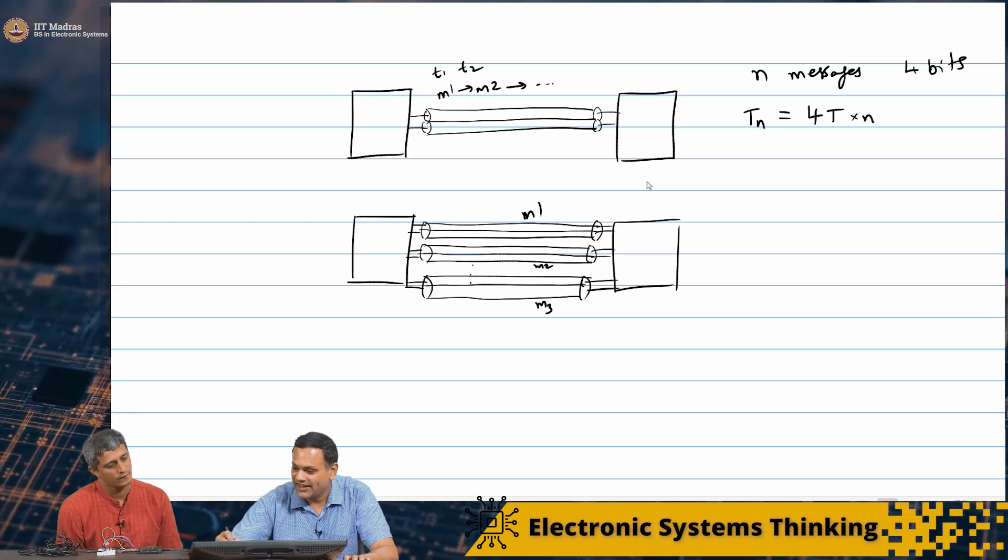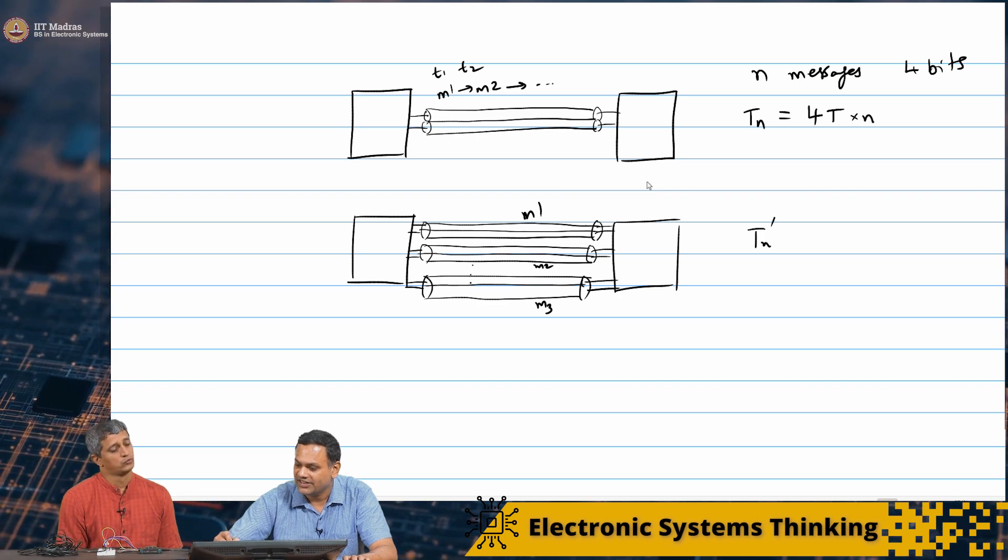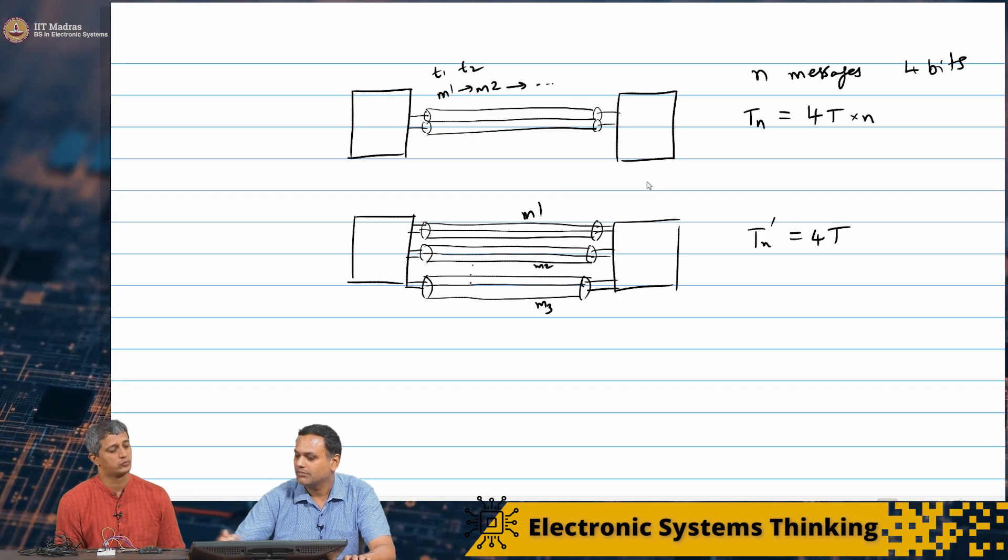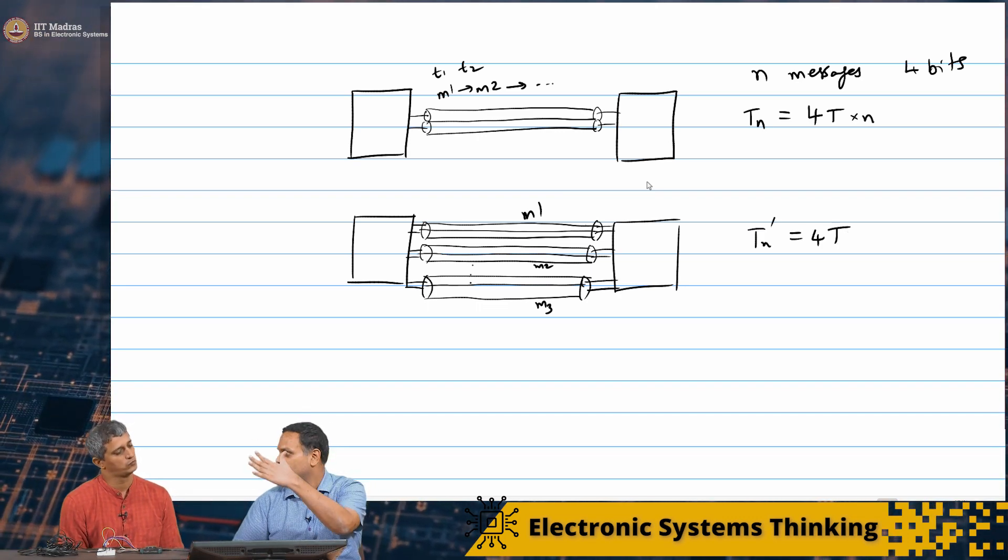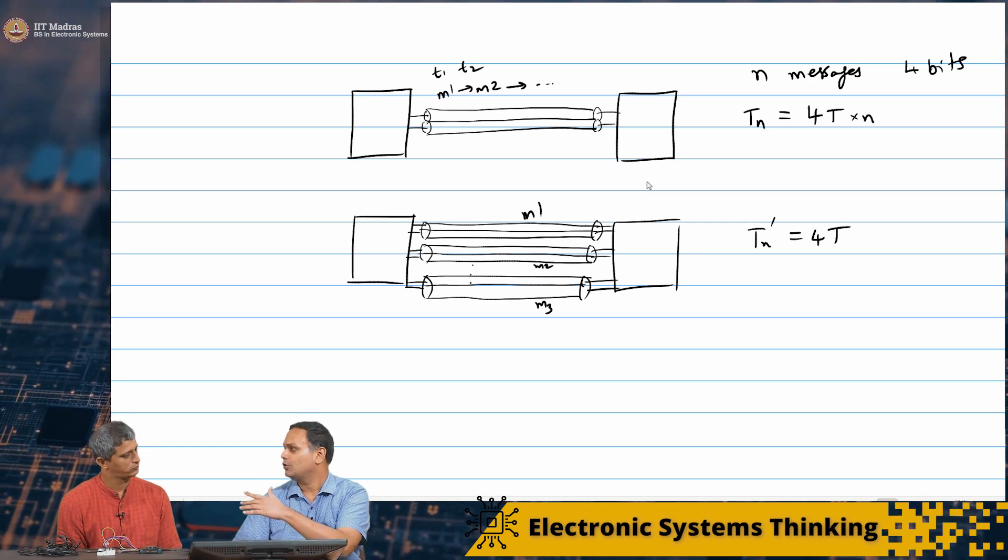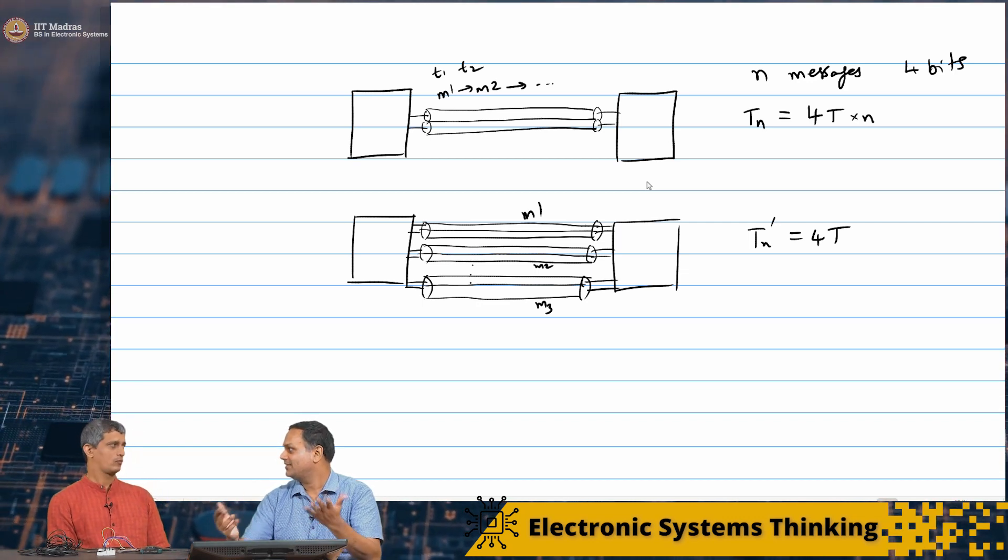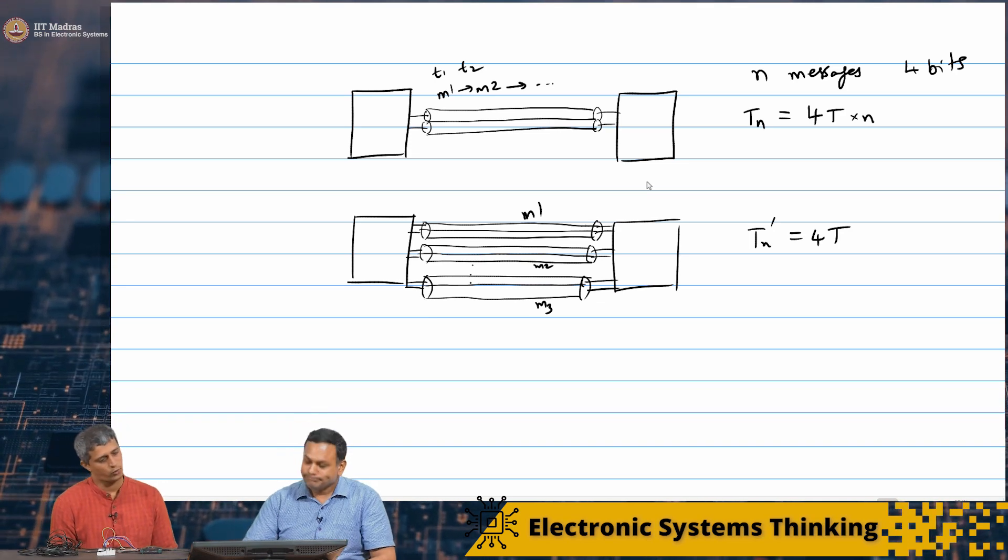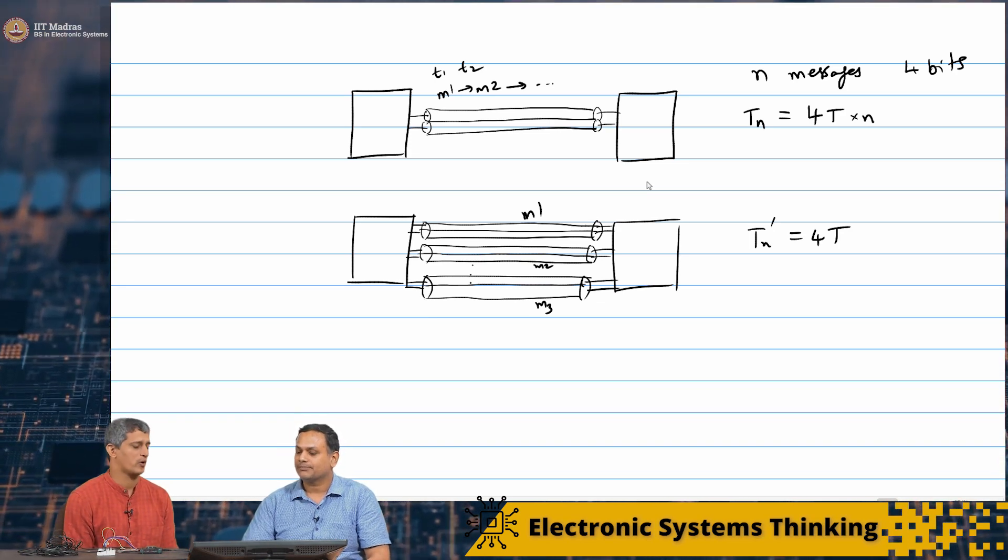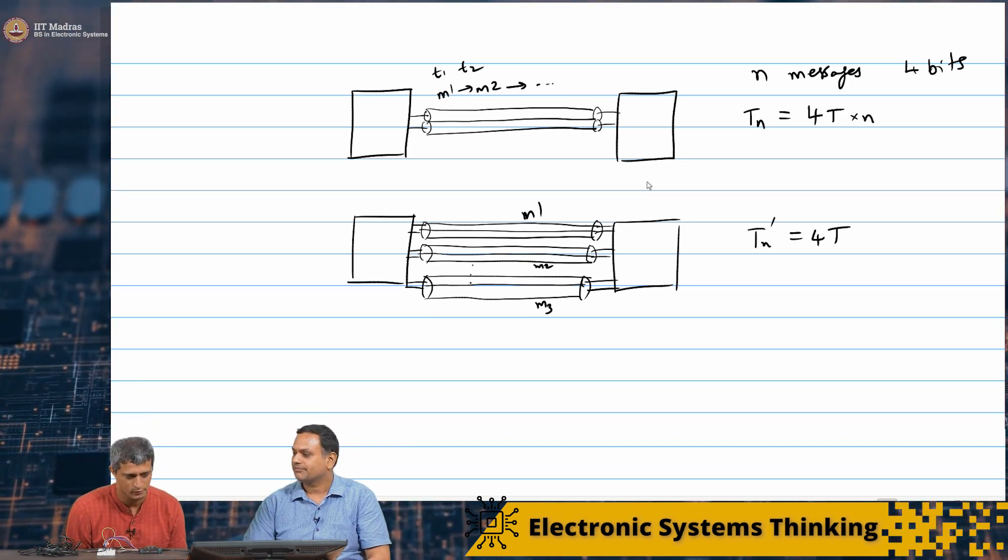Whereas here, this time for n, I will call this tn prime, is simply 4T. Message 1 just goes across in one wire, message 2 goes in one wire. You can very quickly get so much data through it. This is very interesting.